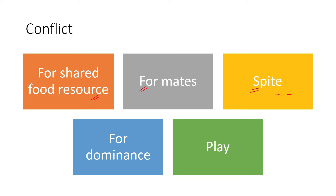Spite occurs when organisms, even though they are getting resources together, still try to challenge the dominant one for a better position — and both of them are harmed. Conflict can also be for dominance, for a particular food resource, or for a particular mate. There are also pseudo conflicts, like play behavior in many organisms — dogs and many carnivores practice conflicts by fighting with each other in a pseudo-replicated way, essentially learning how to fight in real competitions. That is a kind of conflict, but not a proper competitive conflict — it is a pseudo conflict.